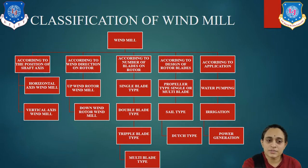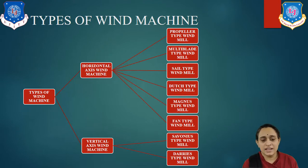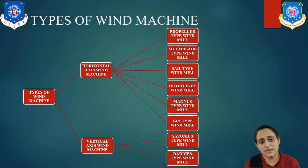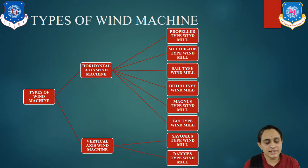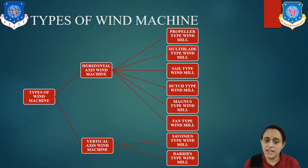Now let us look at the types of wind machines — basically horizontal axis and vertical axis. In the horizontal axis wind machine there are six types: propeller type, multi-blade type, sail type, Dutch type, Magnus type, and fan type. In the vertical type of wind machine, there are two: Savonius and Darrieus.